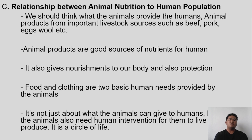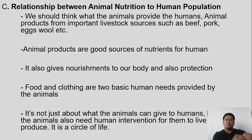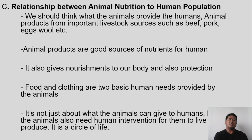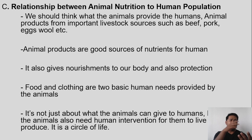What is the relationship between animal nutrition and the human population? We should think about what animals provide to humans. Animal products from important livestock sources such as beef, pork, eggs, wool, milk, and others are what animals provide to people. These animal products are what are given by animals to humans.